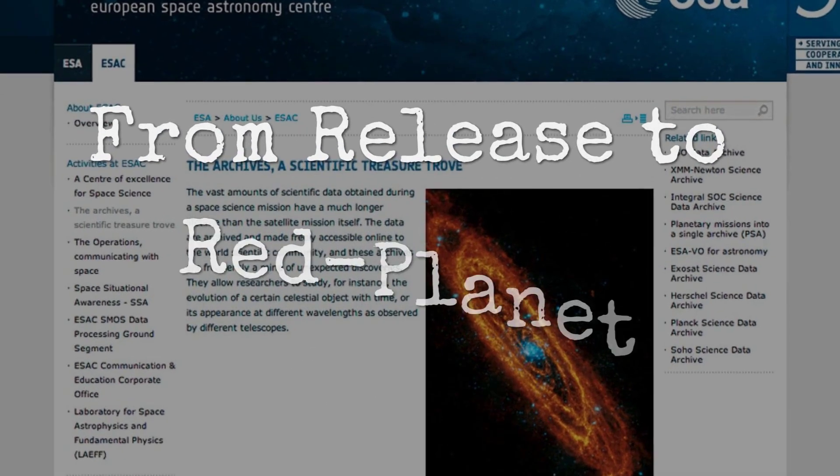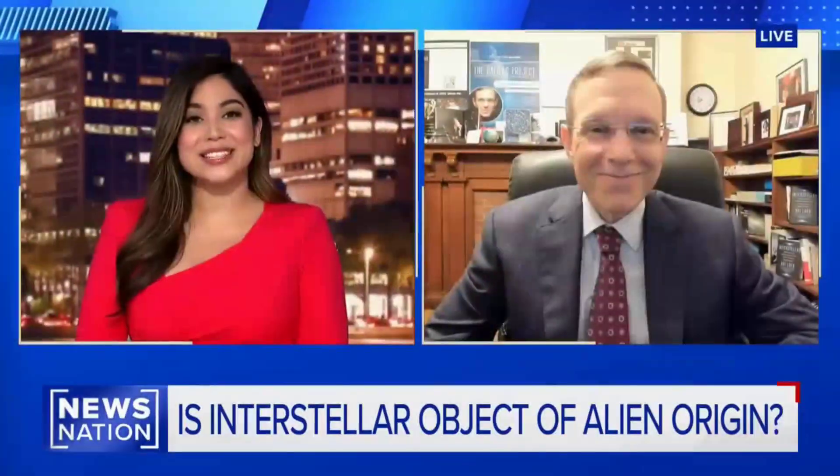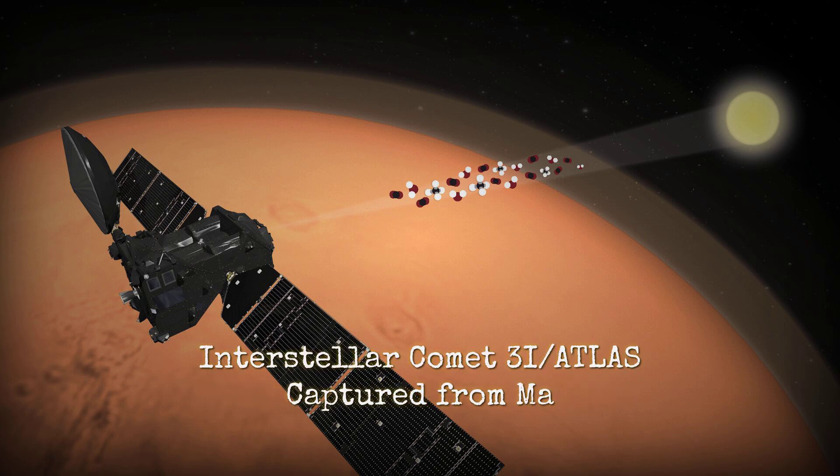Within hours of the European Space Agency publishing the first ExoMars images, the world's scientific networks erupted. The photos, released without fanfare on the European Space Agency's official channels, showed a faint blurry dot gliding across the starfield. A comet, but not just any comet. This was 3I-Atlas, an interstellar wanderer caught in the act by cameras orbiting Mars.